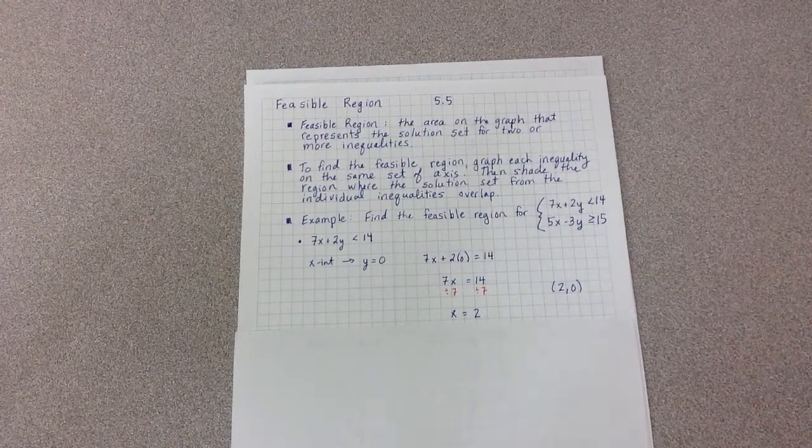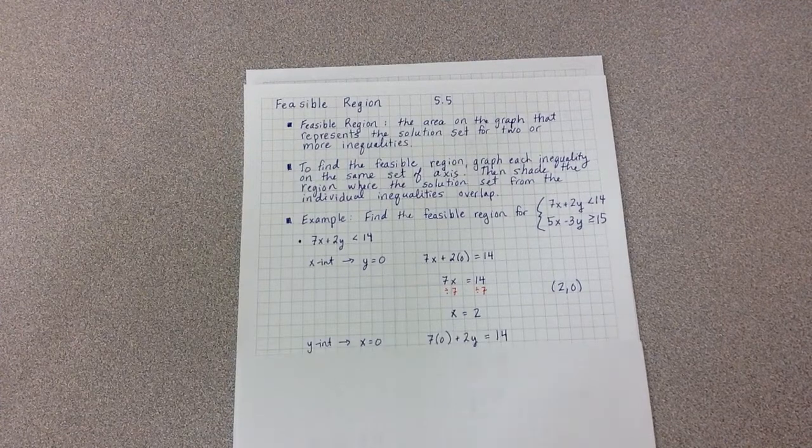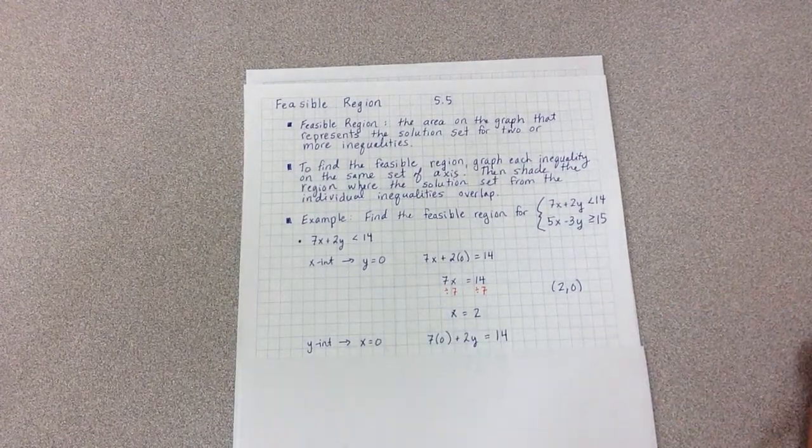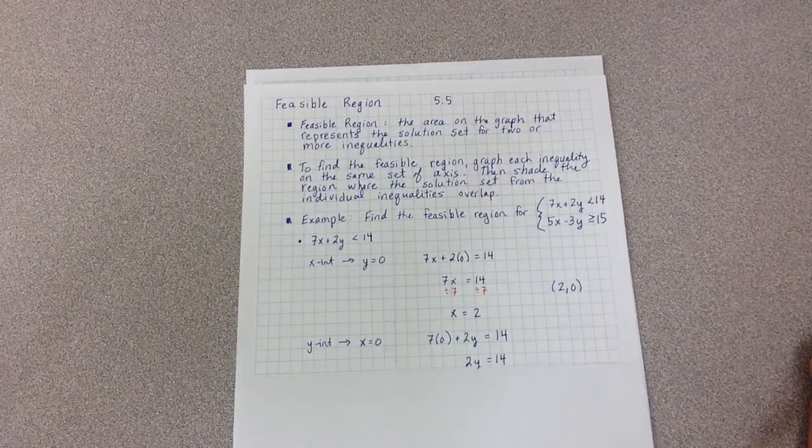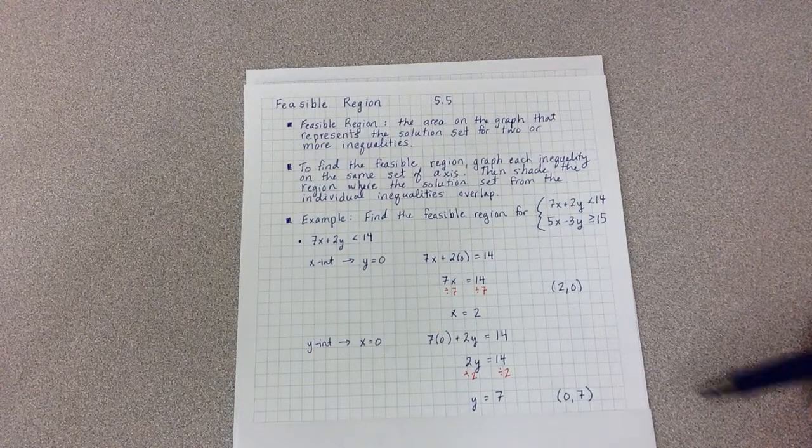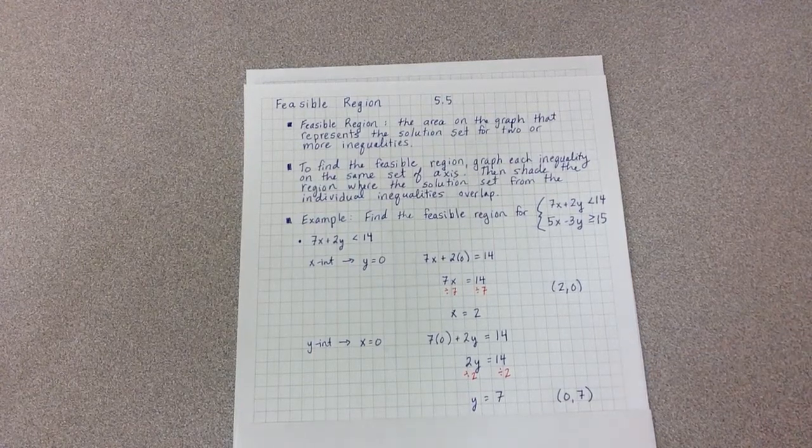I do this exact same process for the y-intercept. That's when x equals 0. I plug 0 in for x, simplify, 2y equals 14, divide by 2, y equals 7. Writing it as a point, 0, 7.